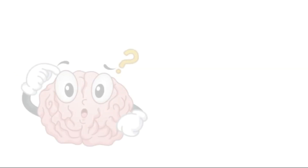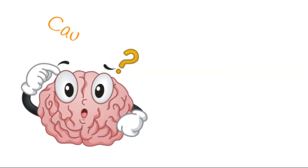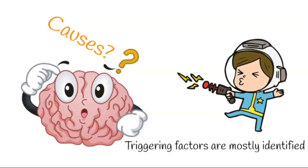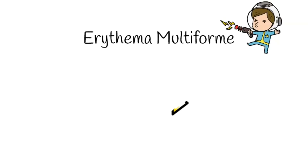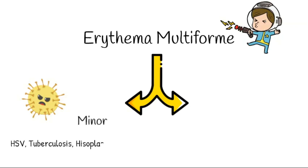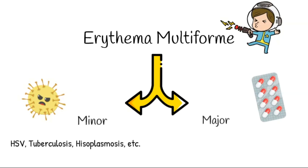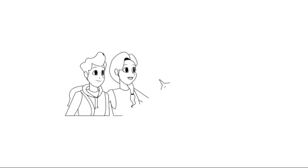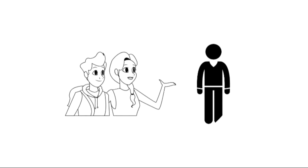Although the basic cause of this disease is unknown, in about half the cases the precipitating or triggering factors can be identified. These factors fall into two large categories. The minor form is usually associated with infectious factors such as herpes simplex virus, tuberculosis, histoplasmosis, etc., whereas the major form is triggered by certain systemic drugs like barbiturates, sulfonamides, phenytoin, etc. Erythema multiforme occurs mainly in young adults and shows a marked male predilection.